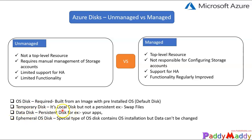Data disks are used for installing applications — for instance, if you want 1 TB of space, you can simply assign that. The final disk type is the Ephemeral OS disk. This is a special type of operating system disk that contains all the OS installation binaries. It's not used for application data — it's purely for installation purposes, and it's the latest type of disk available.